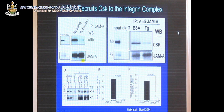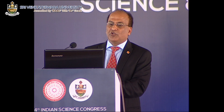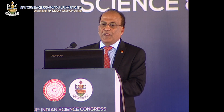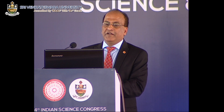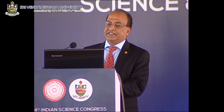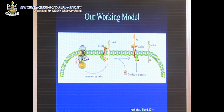If this model is correct, then in the knockout mouse CSK should not be associated with the integrin — and that is exactly what we show: CSK association with integrin is completely lost. So the model is: in the resting state, integrin and JAM-A are together; when platelets are activated, JAM-A separates out, CSK is lost, and the integrin can now activate.